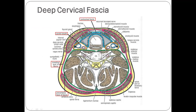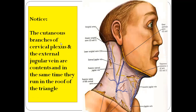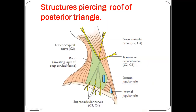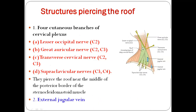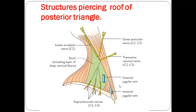The cutaneous branches of the cervical plexus and the external jugular vein are contents that run in the roof of the posterior triangle. The roof is pierced by four cutaneous branches of the cervical plexus — lesser occipital, great auricular, transverse cervical, and supraclavicular nerves — which pierce near the middle of the posterior border of the sternocleidomastoid. The external jugular vein also runs here.